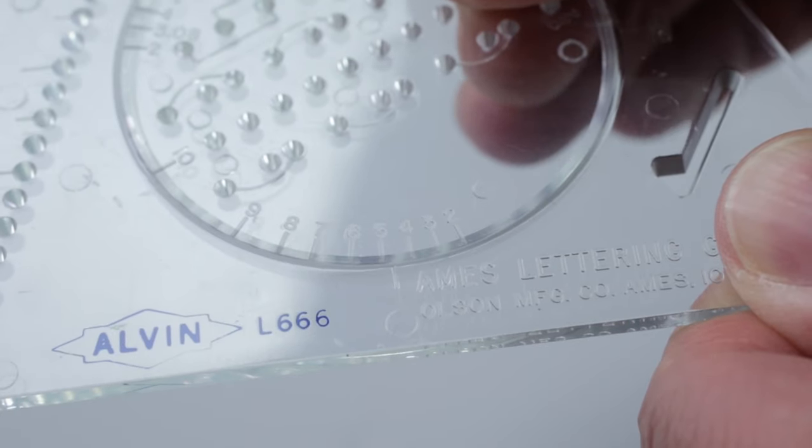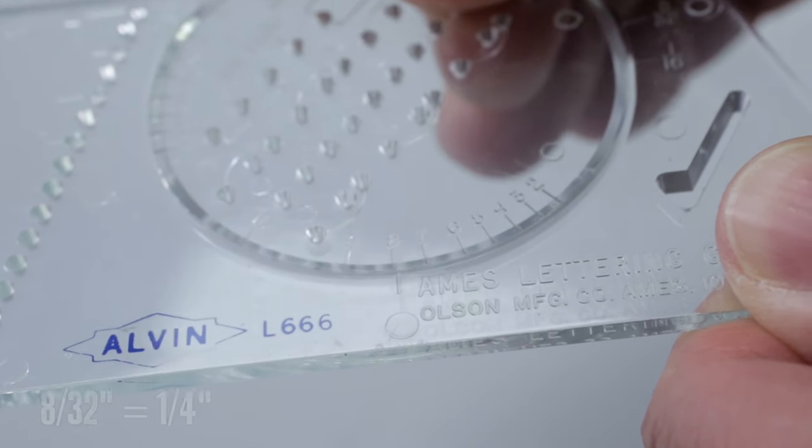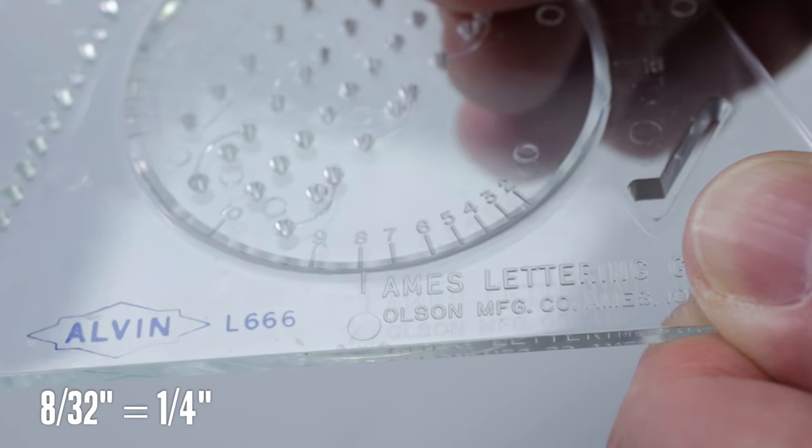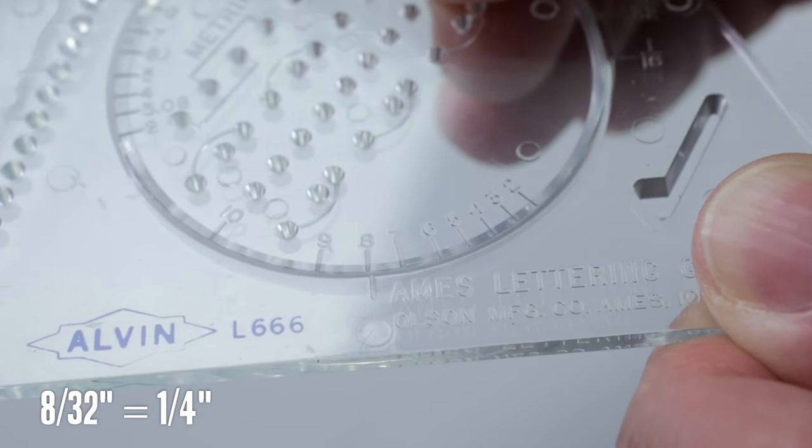So, to draw quarter-inch high letters, rotate the wheel so that the eight is at the frame index mark. Eight thirty-seconds of an inch equals one-quarter of an inch.